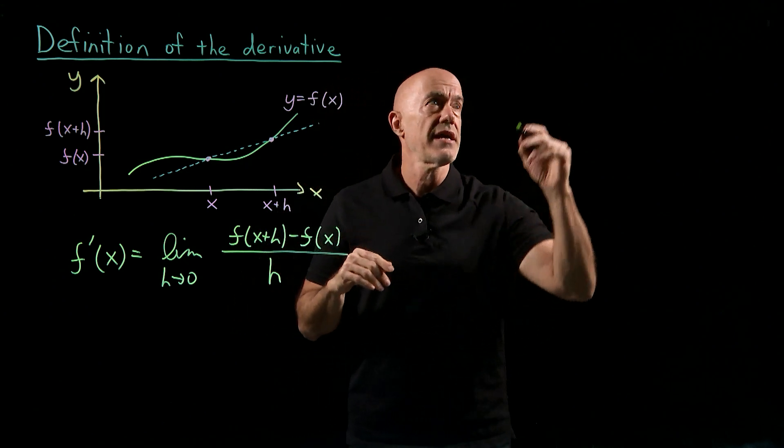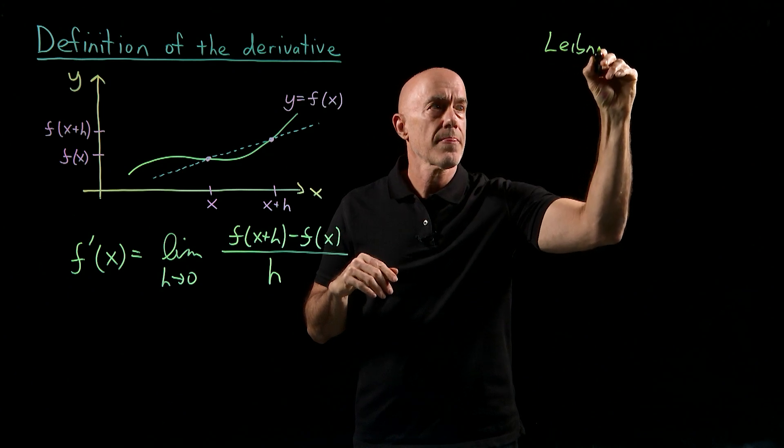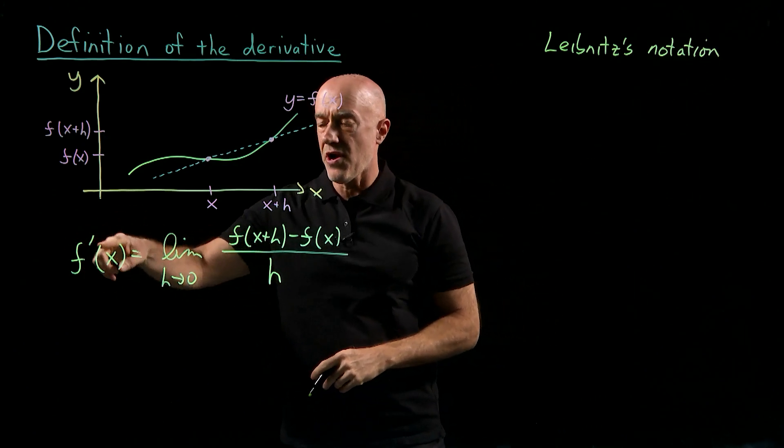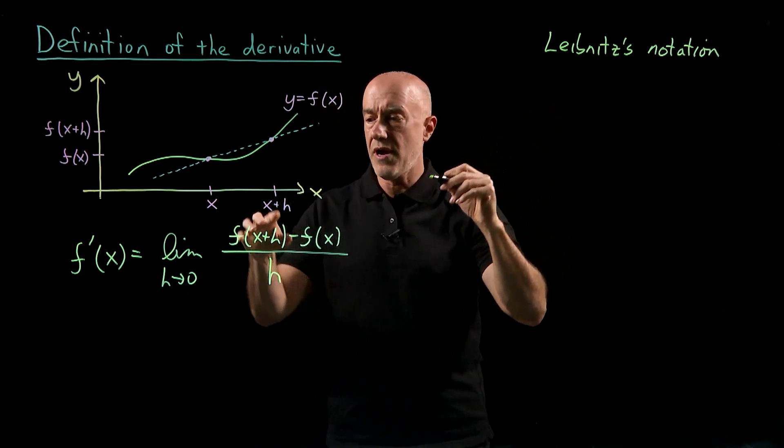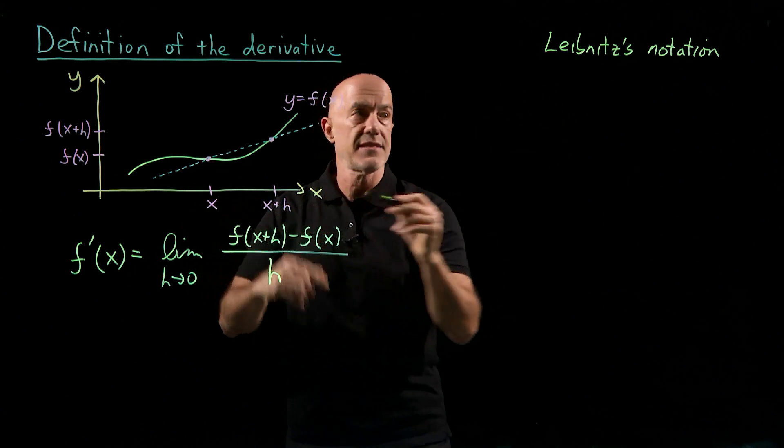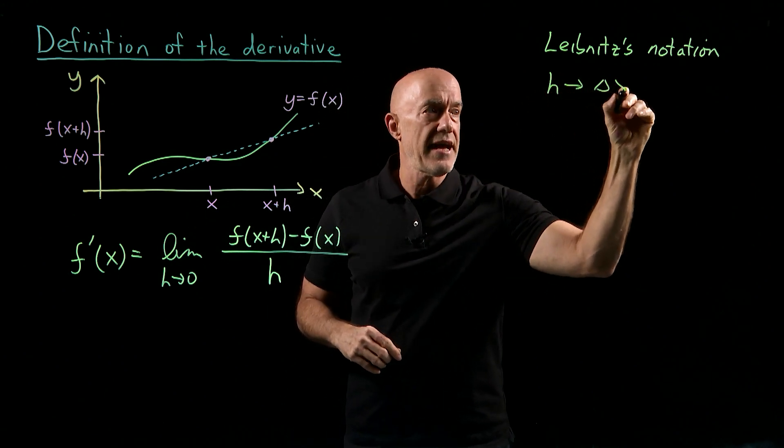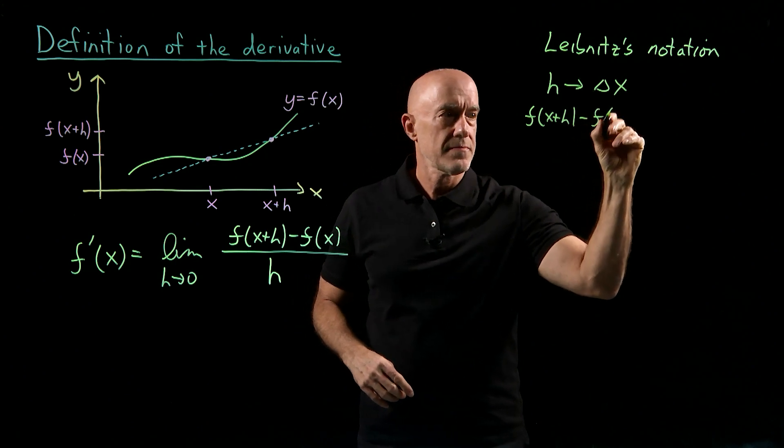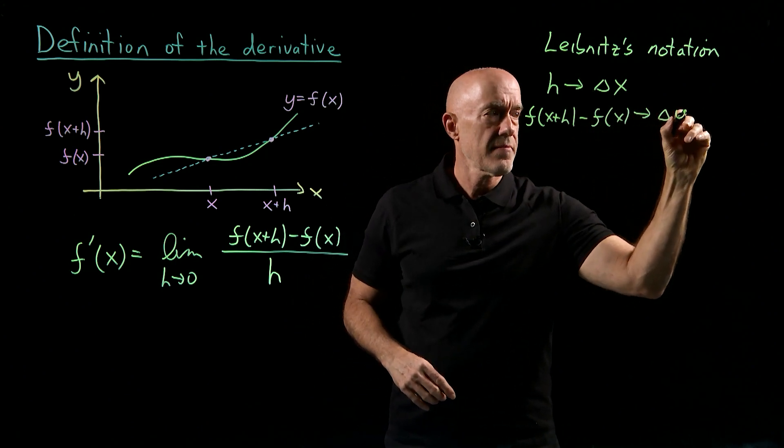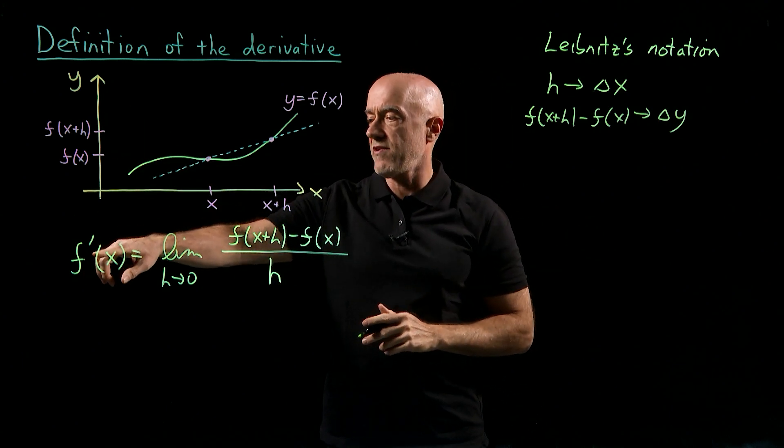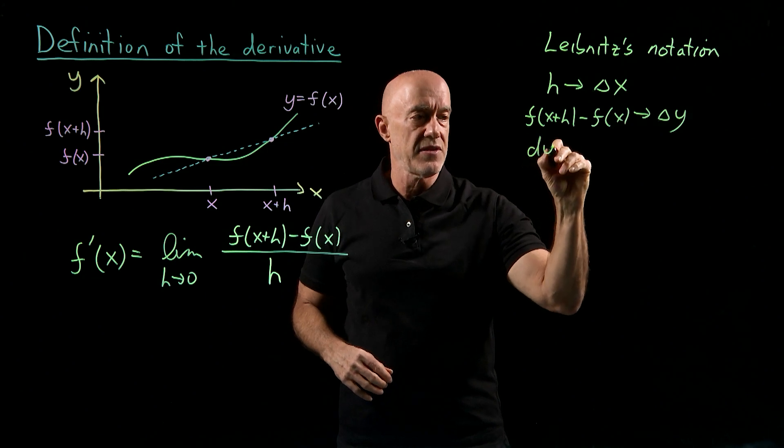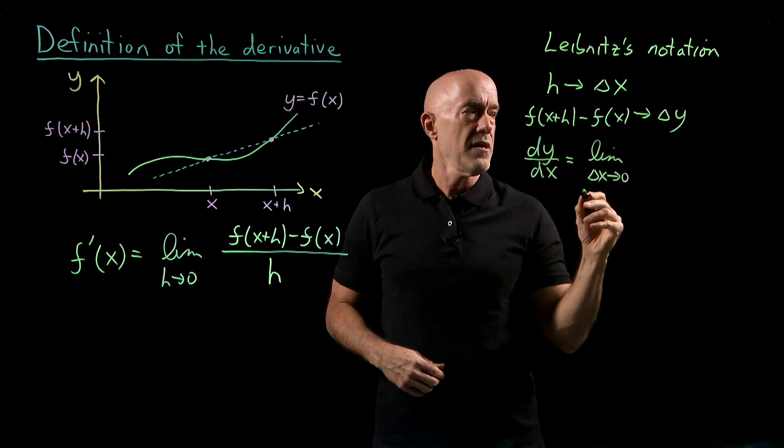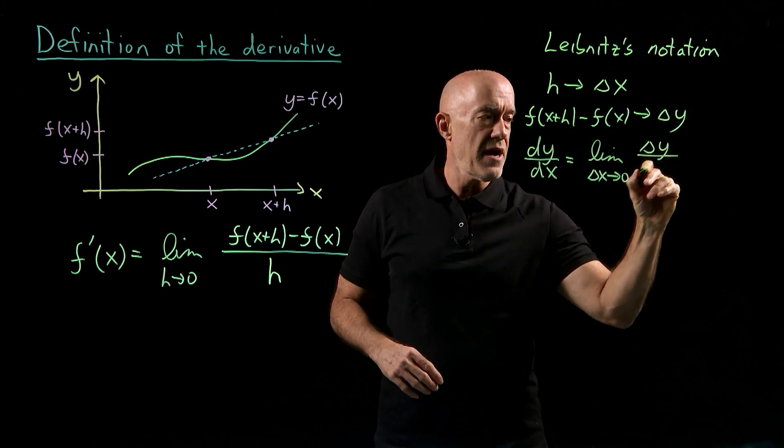Now there's another notation, which is called Leibniz's notation, which is very useful in calculus. Instead of saying f prime, we have our delta x. So the difference between x plus h and x is h, so h we replace by delta x. And the difference between f of x plus h and f of x is our delta y. So in Leibniz's notation, instead of writing the derivative as f prime of x, we write the derivative as dy dx, which is essentially the limit as delta x goes to zero of delta y divided by delta x.